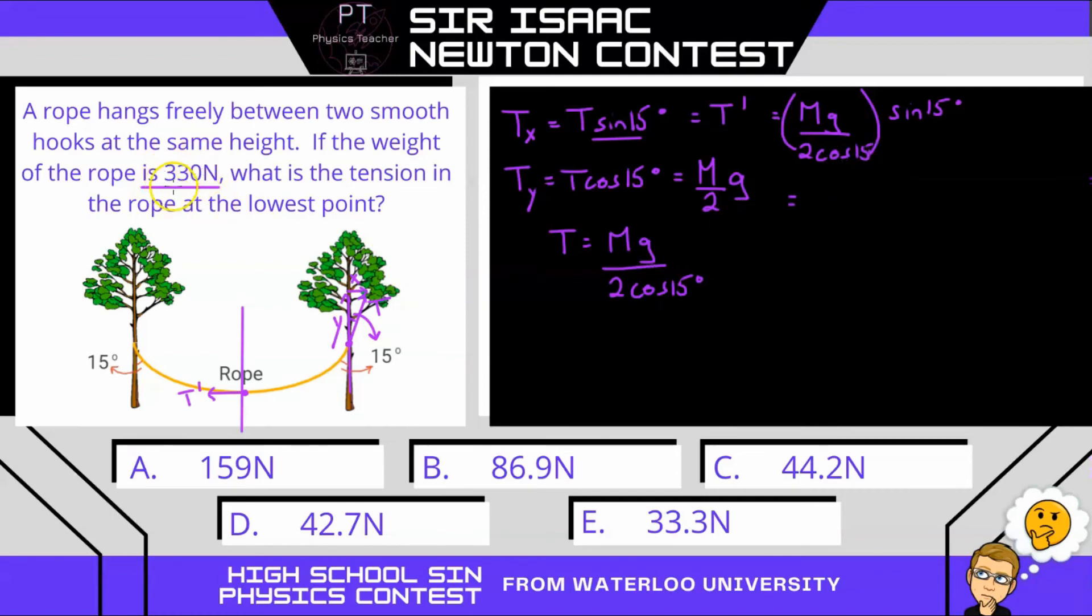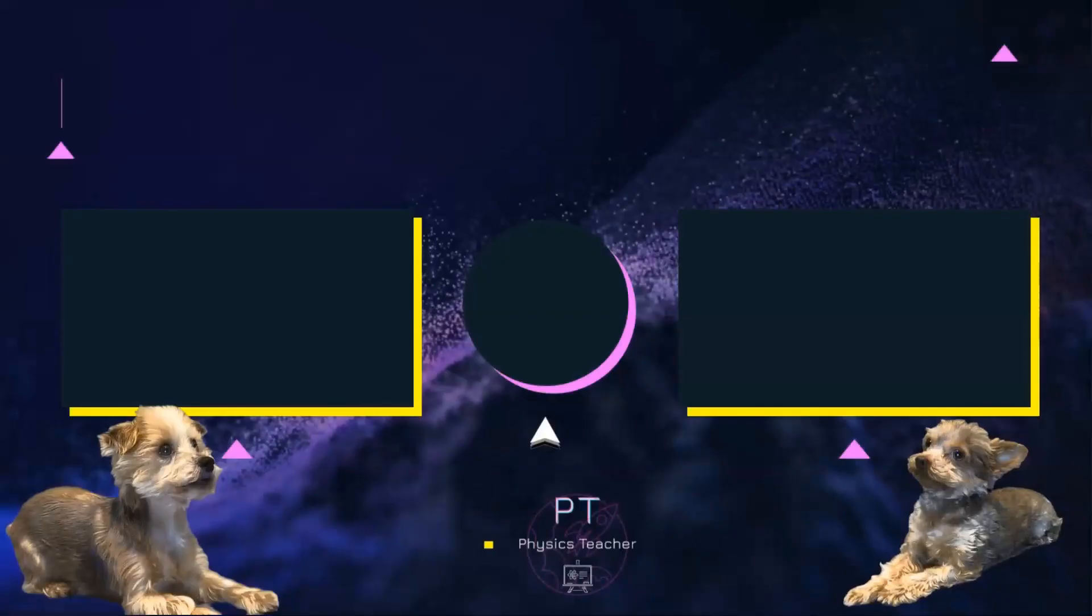We also know the weight, which is 330. So mg is 330 newtons divided by that two times the tan of 15 degrees. So that's going to equal 44.2 newtons. Or our answer is C.